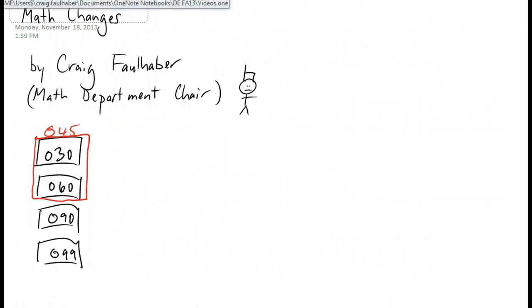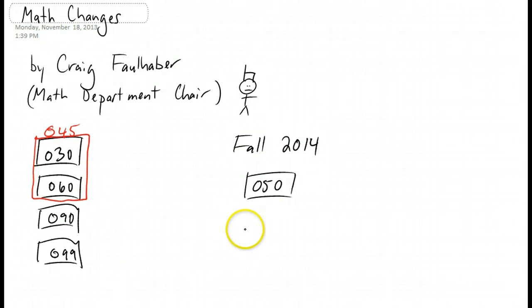The reason is this. Starting in the fall of 2014, all of our O-level math classes will be gone and we'll be replacing everything on the left side with just two classes: math 050 and math 055.